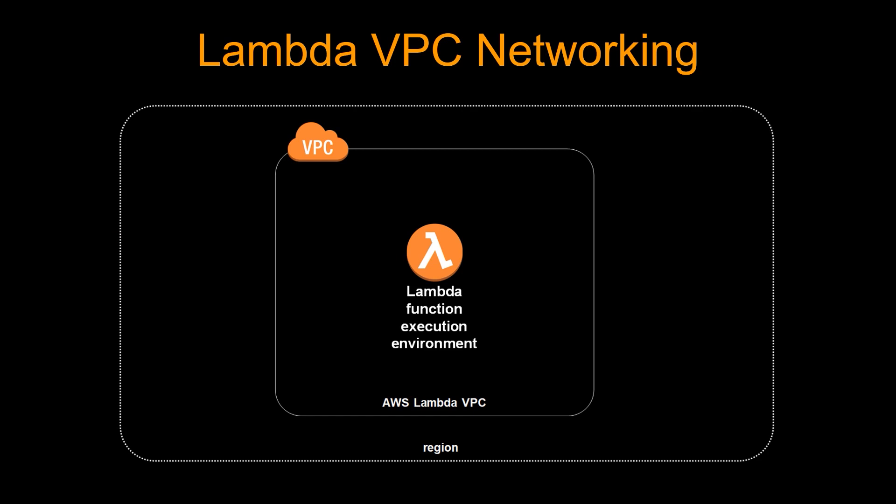Let's start by understanding how Lambdas in VPC are created. When you create a Lambda within VPC, it doesn't really create a Lambda within your VPC. It creates a Lambda within a VPC which is managed by AWS in the same region. Let's say you create a Lambda, allocate it maybe one or two gigabytes of memory, and then it runs. You don't want the capacity of your VPC to be used because of this, since you still have to run EC2 and all the other stuff. That's why the underlying Lambda computing infrastructure is not consuming the capacity of your own VPC — it's provided by a managed AWS environment.